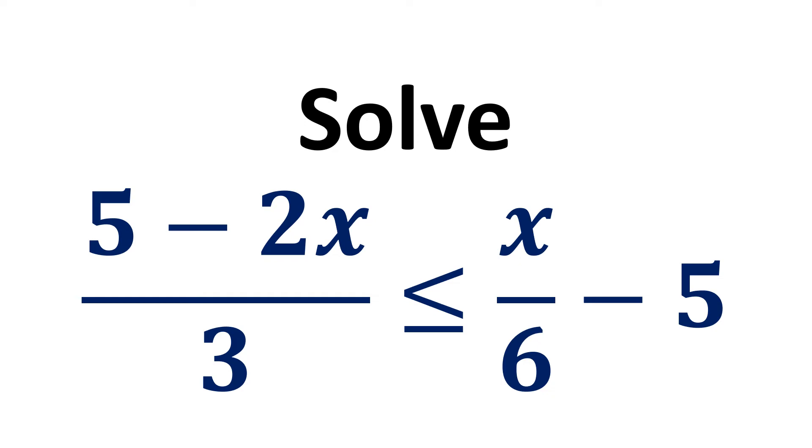In this video, we learn to solve inequality 5 minus 2 times x upon 3 is less than or equal to x upon 6 minus 5.